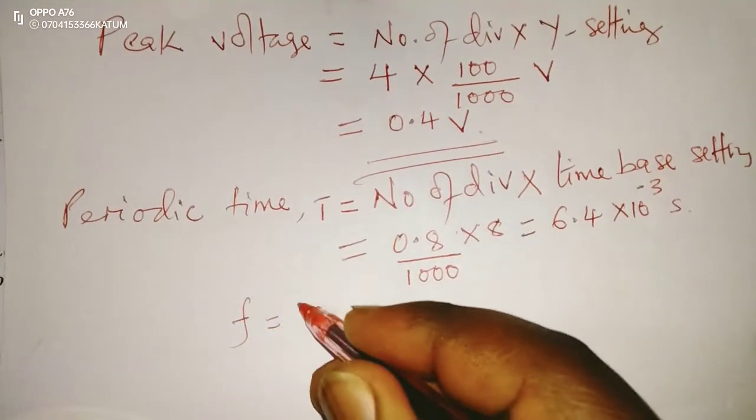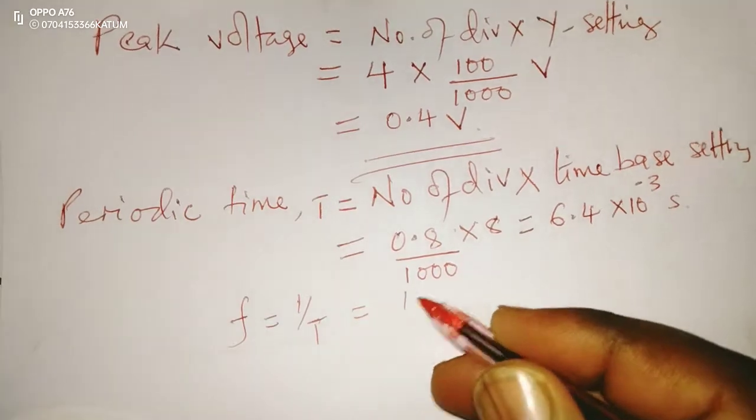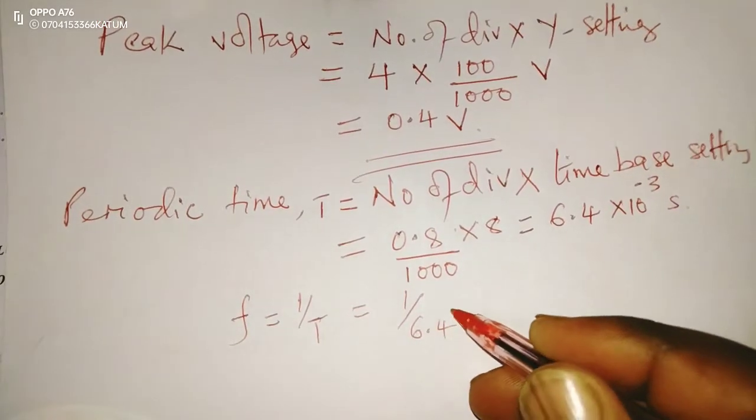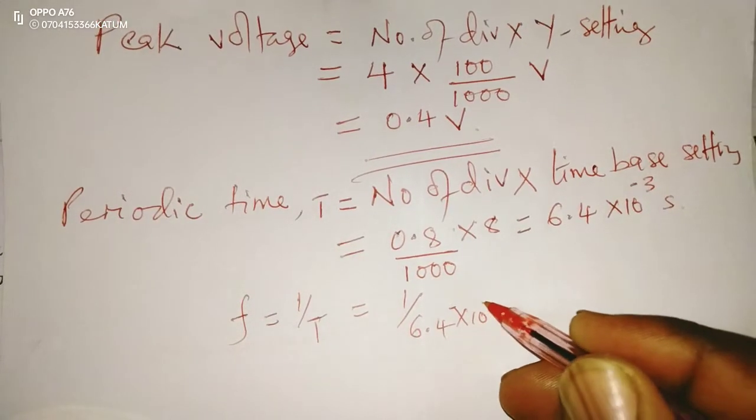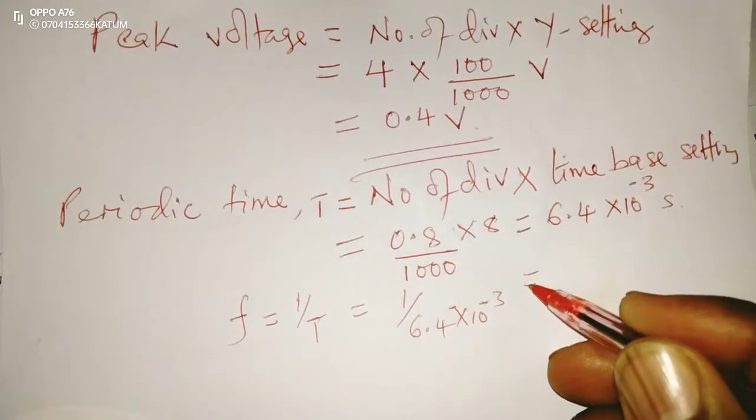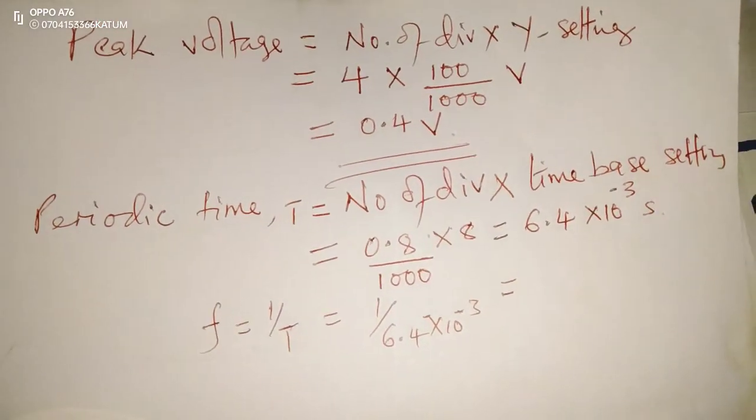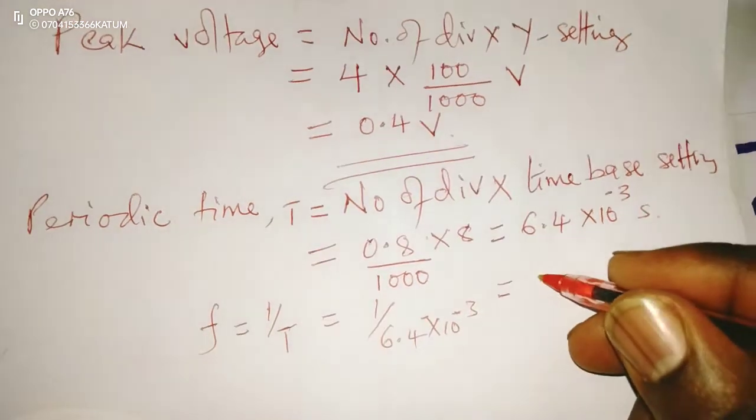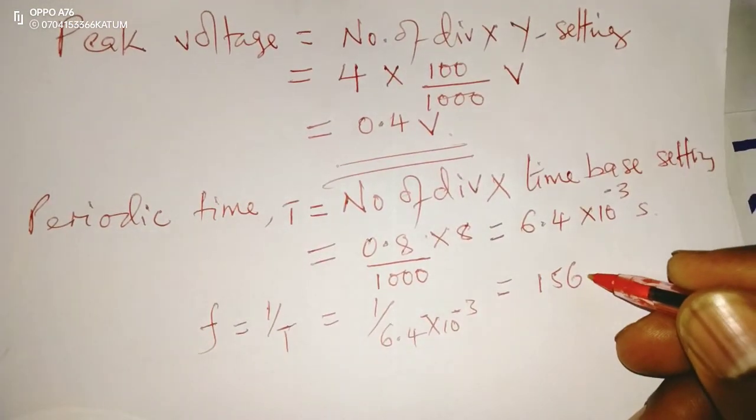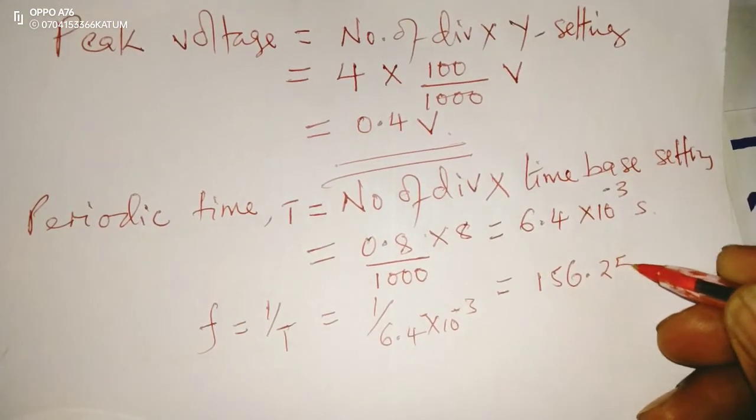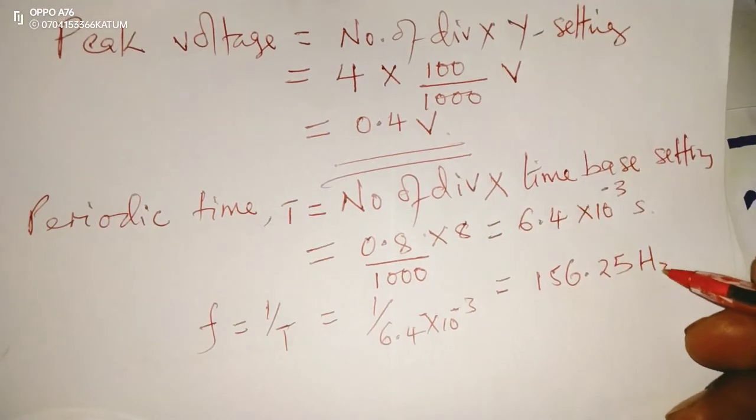Now, to get frequency, we need to get the reciprocal of period. So, 1 over 6.4 times 10 raised to the power of negative 3. This is going to give us, when we take the reciprocal, 156.25 Hz, the unit of frequency.